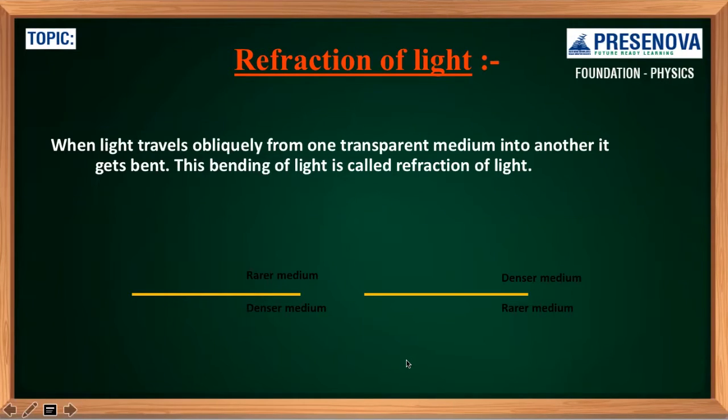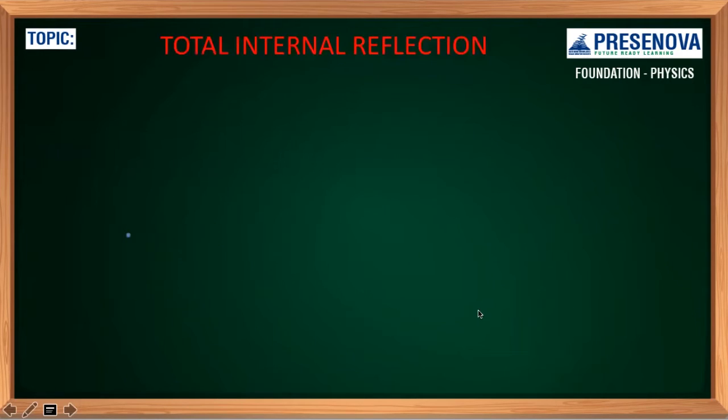Before moving to total internal reflection, we will have just a brief recap of refraction of light. According to refraction of light, when light moves from rarer medium to denser medium, it bends towards the normal. And when light propagates from denser to rarer medium, it moves away from the normal.